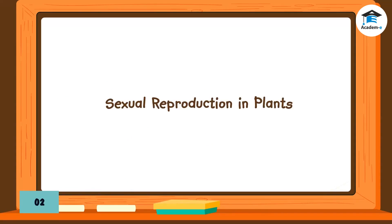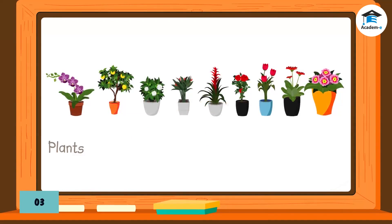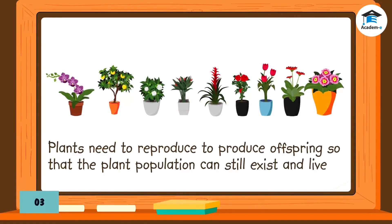Sexual reproduction in plants: Like animals, plants need to reproduce to produce offspring so that the plant population can still exist and live on Earth. Plants have different modes of reproduction — some plants reproduce sexually while others reproduce asexually.